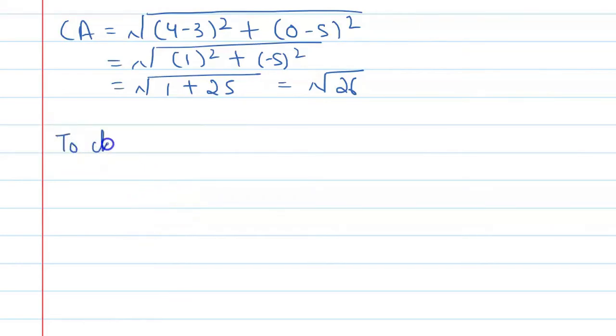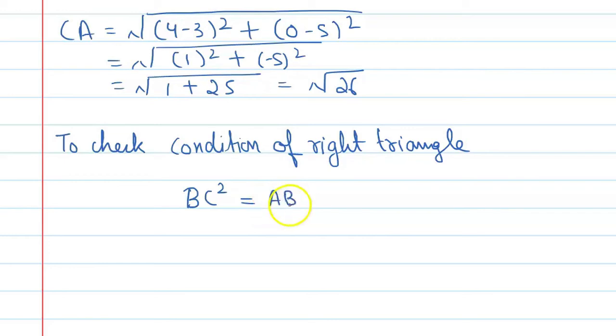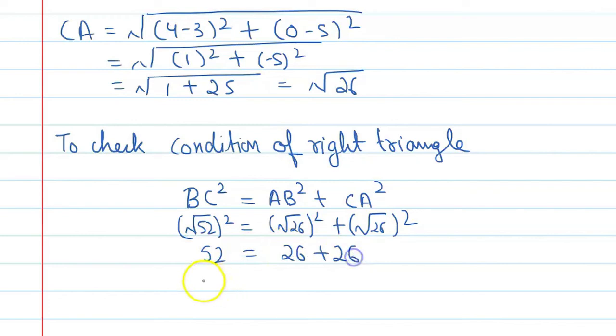To check the condition of a right angle triangle, the sum of the squares of two sides must equal the square of the third side. Let's check: BC² equals AB² plus CA². Square root 52 squared equals square root 26 squared plus square root 26 squared. This is 52 equals 26 plus 26, so 52 equals 52. Both are equal, so this condition is applicable for the given triangle.